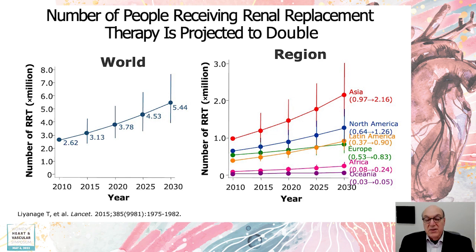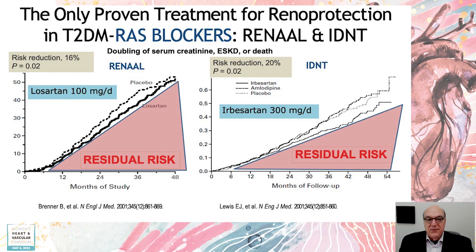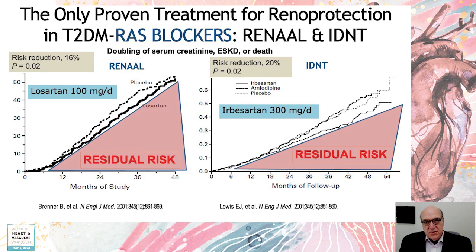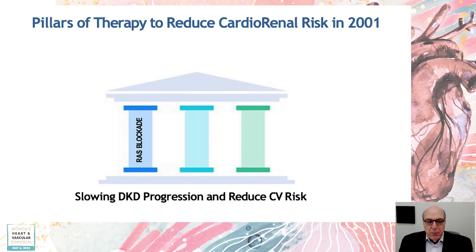If you look at dialysis rates in the world, it's going up and it's going to more than double by 2030 compared to 2010. We have two famous trials with angiotensin receptor blockers — the Renal and IDNT trials — that definitely slow kidney disease progression. Unfortunately, you can see the amount of residual risk remaining. That's a good start, but definitely not a finish. If you use these agents correctly, you have your first pillar of therapy: RAS blockade.